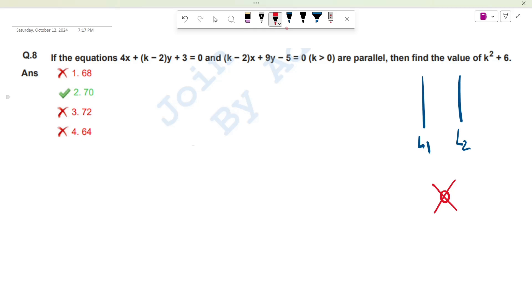So in parallel lines, you will know one thing. A1 upon A2 is equal to B1 upon B2 is not equal to C1 upon C2.